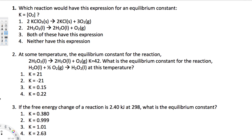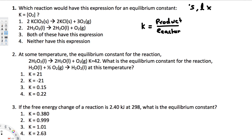The first question asks which reaction would have K = [O₂] as its equilibrium constant expression. Before solving this, we need to know two key rules: solids and liquids do not appear in the equilibrium constant expression. Also, the equilibrium constant is written as products over reactants.